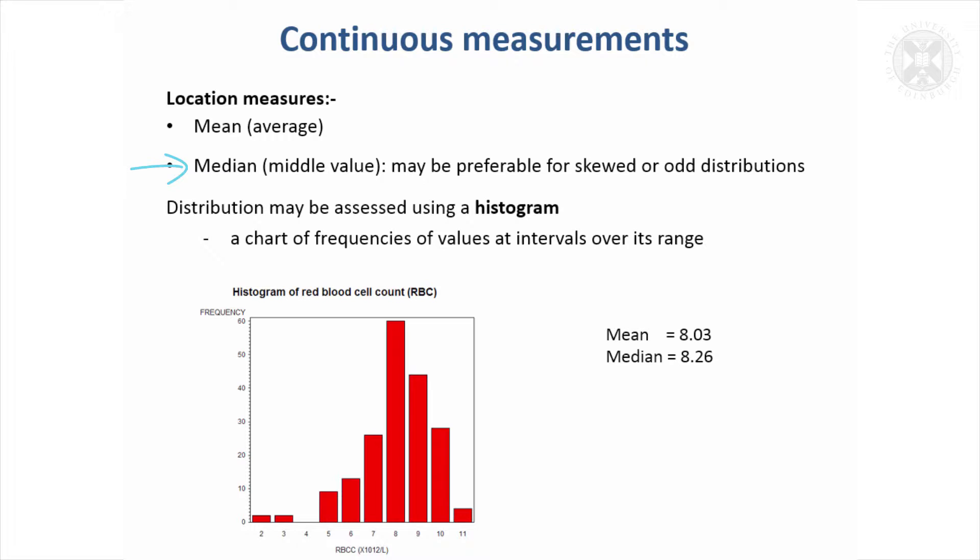If it was really skewed or you had lots of outlying values or it looked odd in some way, it might be better to use a median to summarize the data because it'll give you a sense of where the middle of the data is, whereas the mean is going to be very dominated by large values.